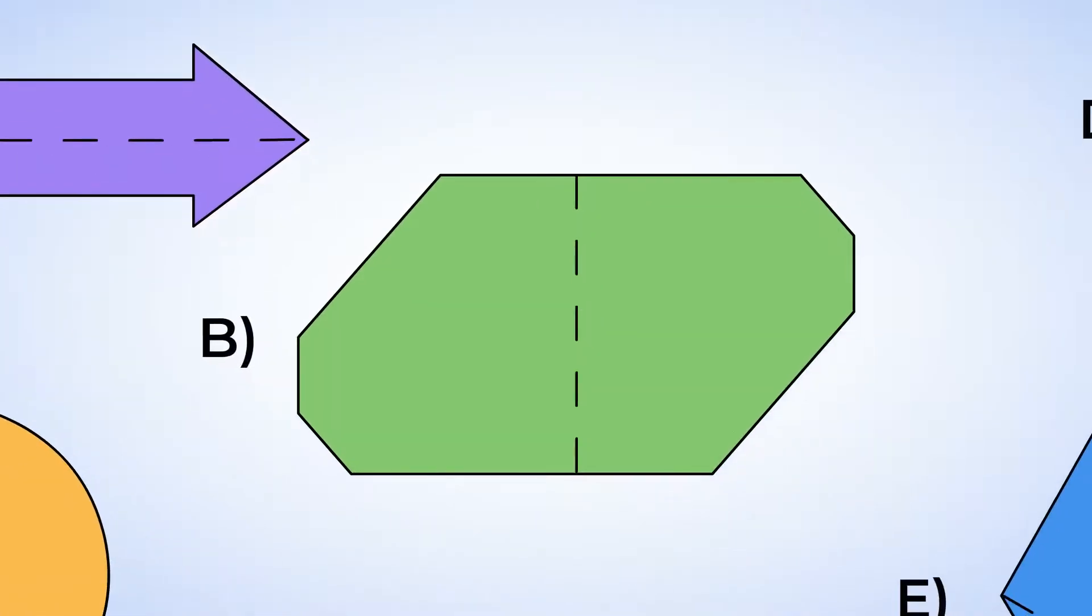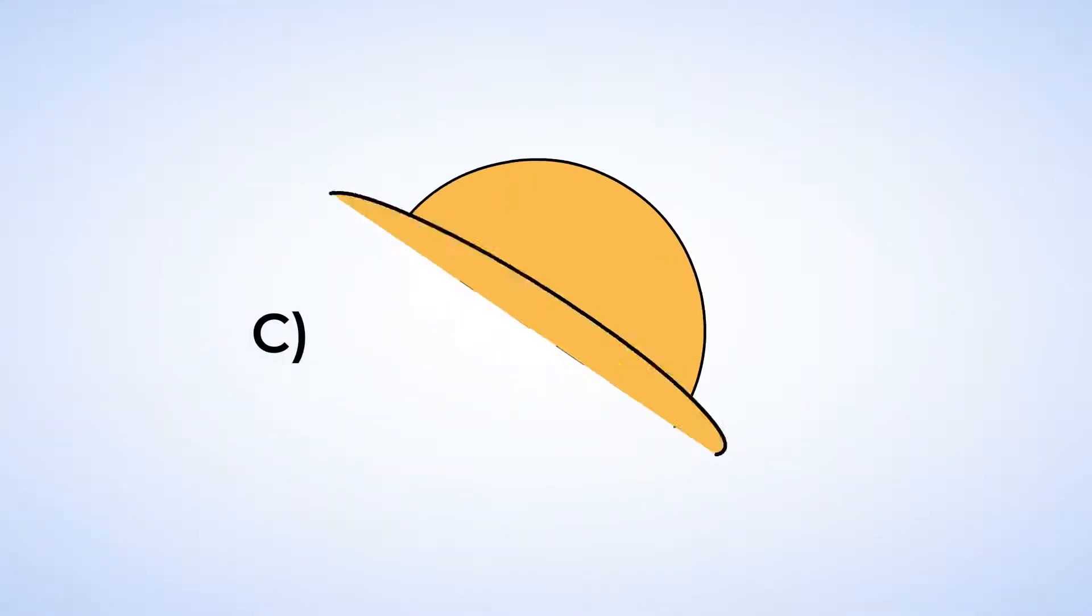Now check shape B. Look at the part on the right. If we fold this shape in half, this part will be too high to match the left side. So that's not a line of symmetry. Shape C has a line that splits the circle into two equal parts, so that is a line of symmetry.